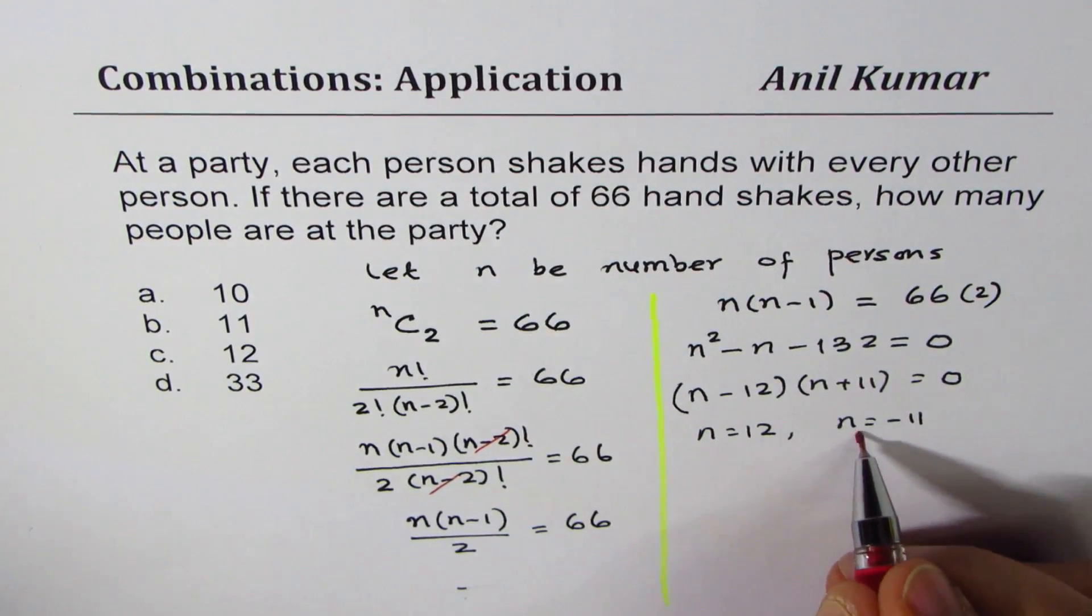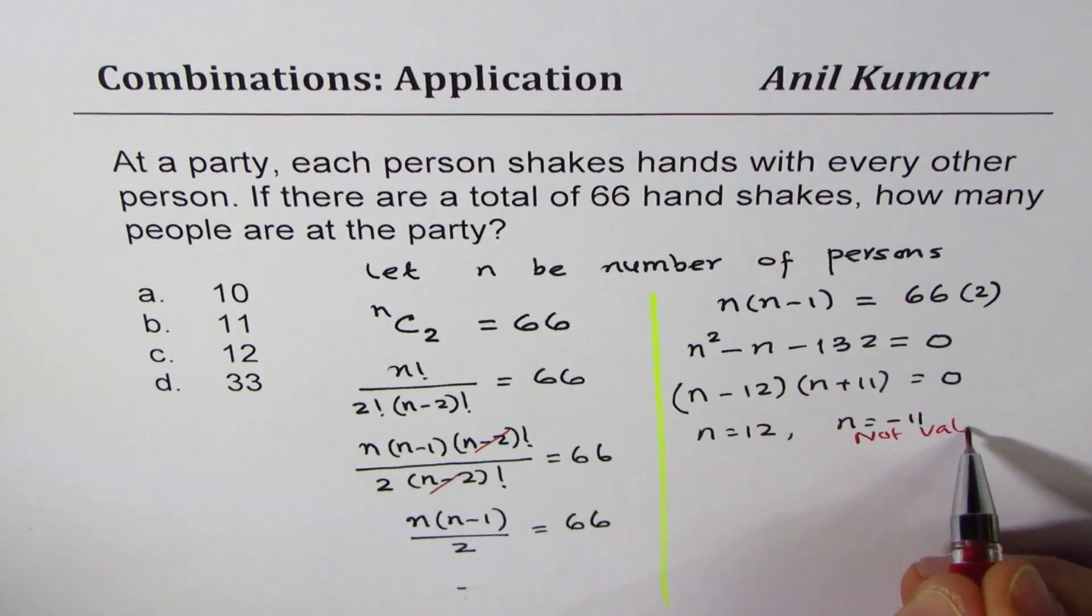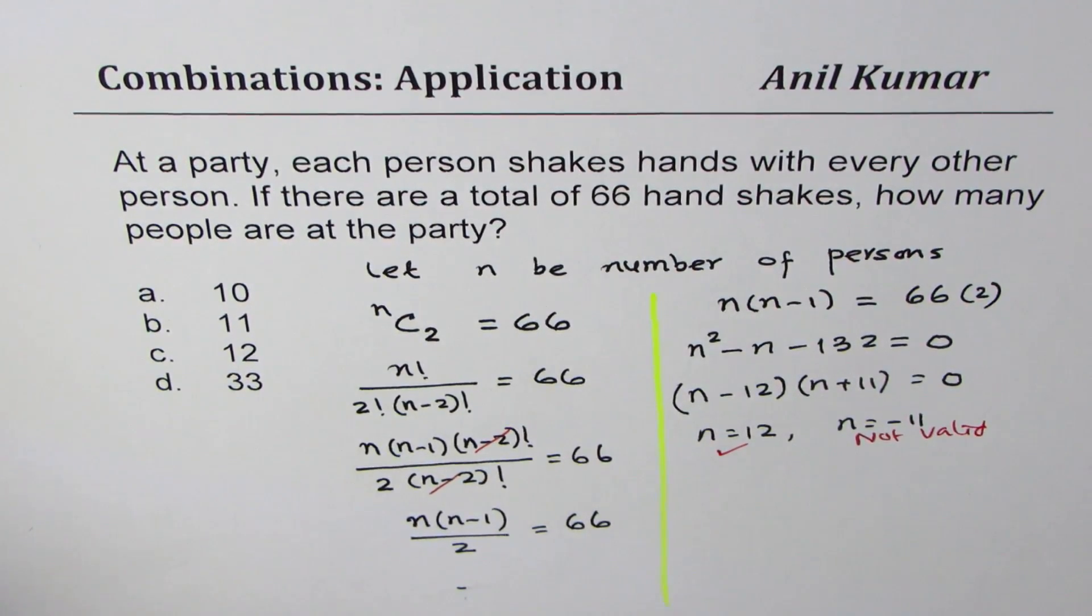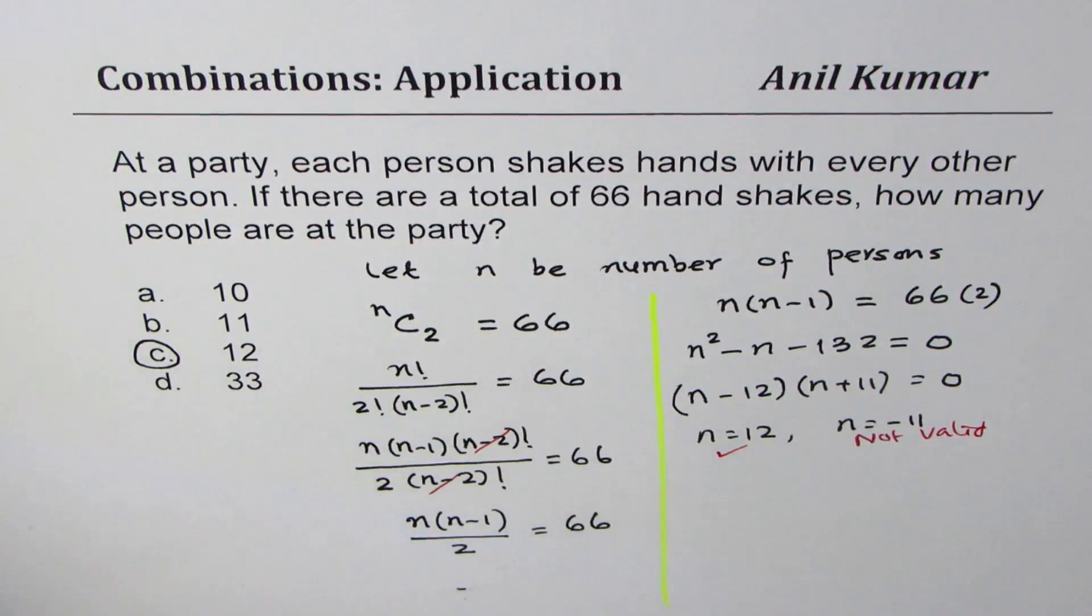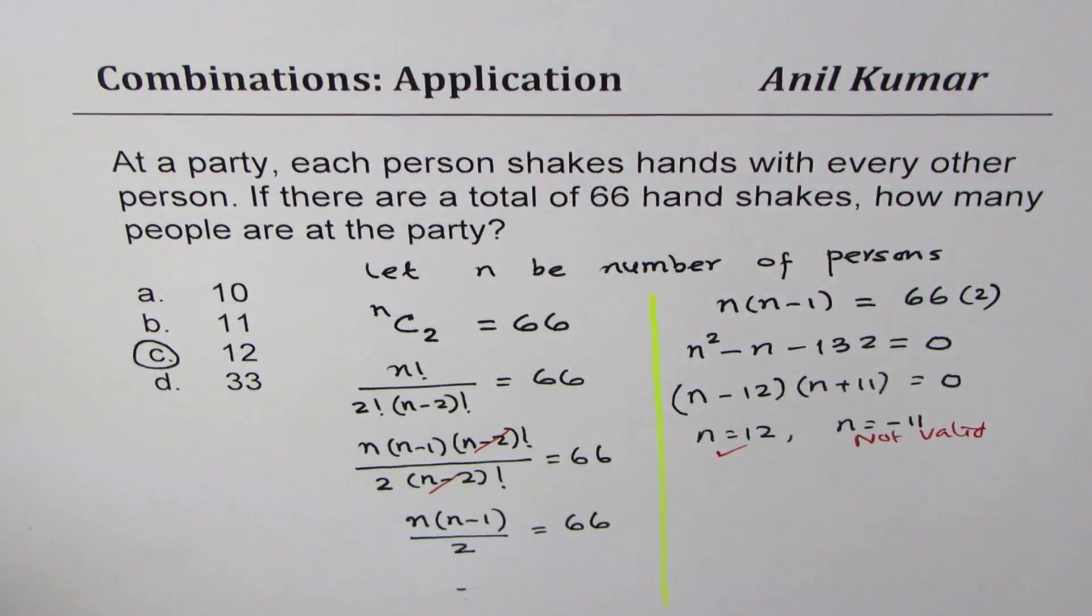Now, that is not valid. So the only valid answer is n equals 12. So option C is the correct option. And that is how it could be solved. I hope that helps. Thanks and all the best.